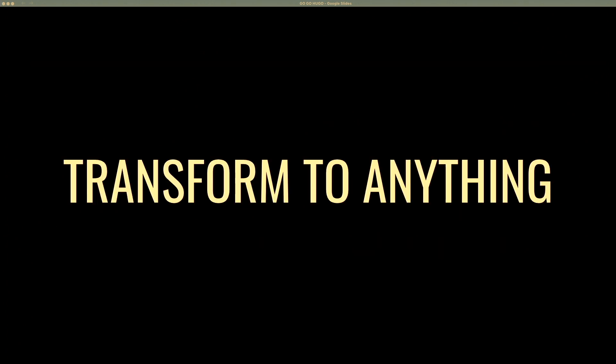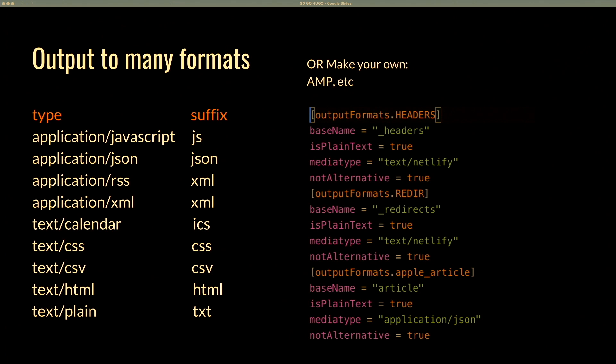You can transform your content to anything. As your websites get more complicated, just outputting HTML may not be enough. Hugo natively supports output to formats like JavaScript, JSON, and XML. All of my sites output header and redirects files for Netlify so I can control my server from there — adding caching, content security policies, and that sort of thing right from the build.